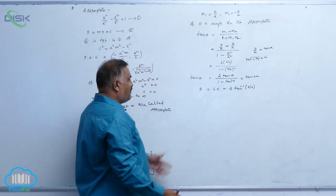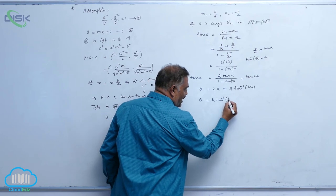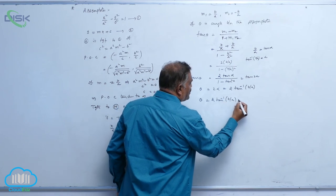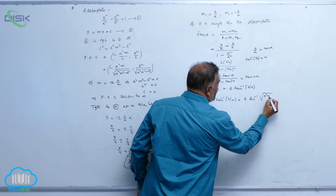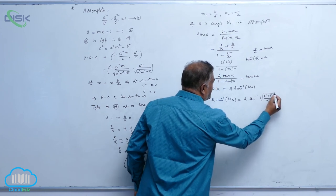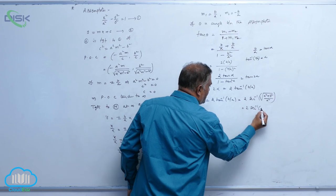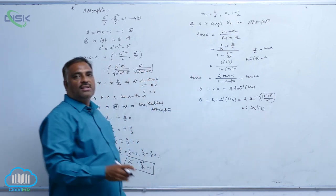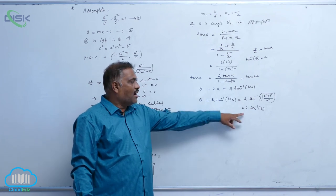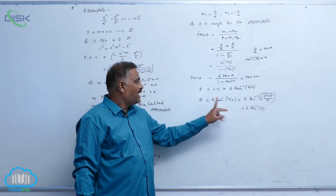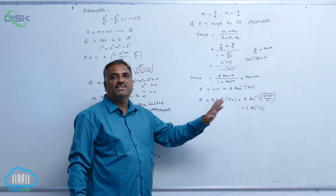Writing θ = 2 tan⁻¹(b/a), it is also equal to 2 sec⁻¹(√(a² + b²)/a), that is 2 sec⁻¹(e). So θ, the angle between the two asymptotes, is given by 2 tan⁻¹(b/a) or 2 sec⁻¹(e).